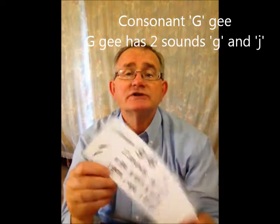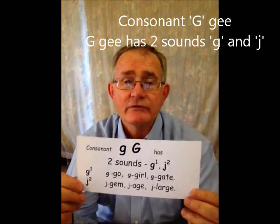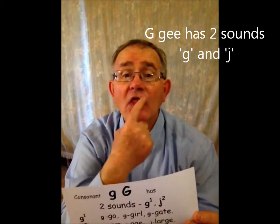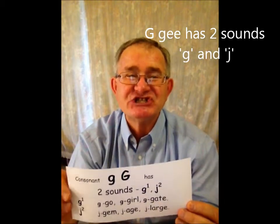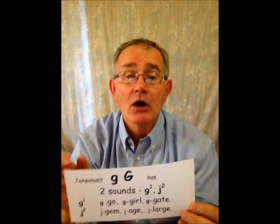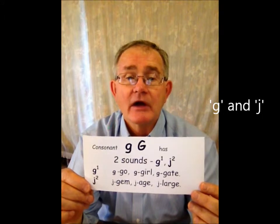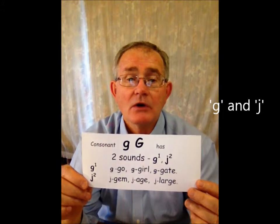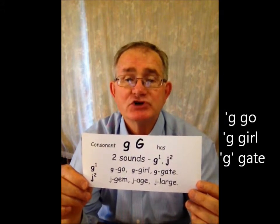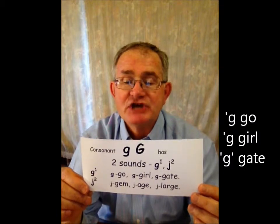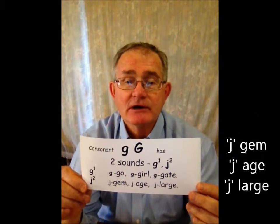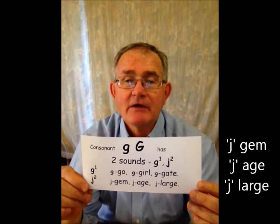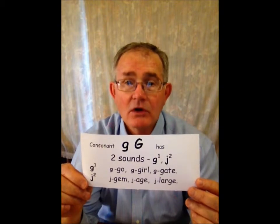G. G has two sounds: G and J. See my mouth? G. And J. G — go. G — girl. G — gate. And the J sound — gem. G — age. G — large. So G has two sounds: G and J.